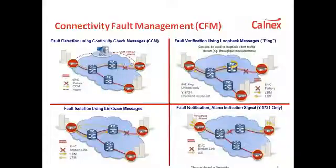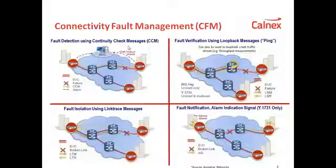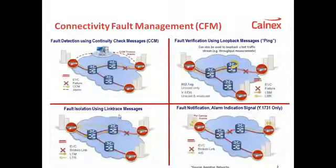If there is a break in the line, the CCM messages stop being received by the end node and the end node will report an alarm. Connectivity and fault management is also about verifying and locating these alarms, and messages such as loopback or link trace can be used to do this.